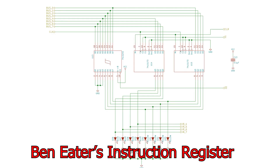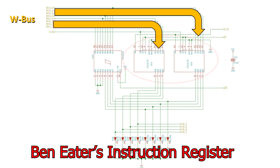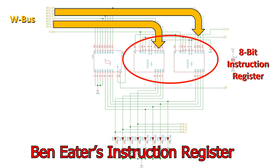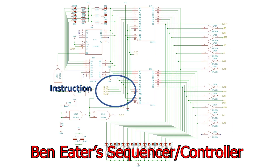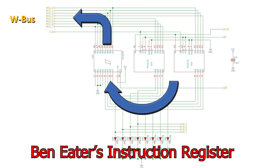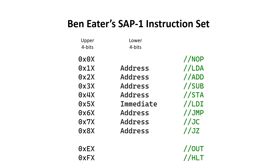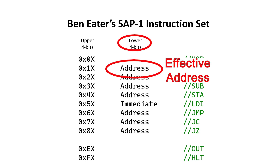Here's the instruction register in the SAP1. From the schematic we see that it takes 8 bits from the W bus and stores the information in two 4-bit registers to form an 8-bit register. Clocking information into the instruction register is controlled by the II-bar signal. The output of the instruction register goes directly to the address pins of some of the ROMs inside the sequencer controller. Ben's SAP1 design includes a feedback pathway that I'm not going to have in the SAP 6502. When the IO-bar signal is low, the output of the instruction register is presented to the W bus via a 245 buffer. Ben does this because in his design the instruction register also acts as an effective address register, where the address is held in the lower four bits and transferred to the memory address register when needed.